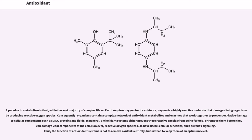In general, antioxidant systems either prevent these reactive species from being formed, or remove them before they can damage vital components of the cell. However, reactive oxygen species also have useful cellular functions, such as redox signaling. Thus, the function of antioxidant systems is not to remove oxidants entirely, but instead to keep them at an optimum level.